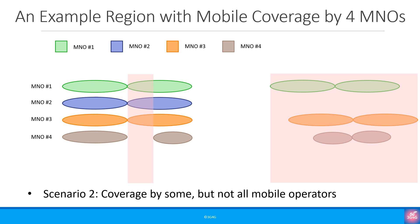When they initiate an emergency call, the mobile will connect to any of the other networks and start the call. In theory, a mobile device doesn't even need to have a SIM to make an emergency call. But most countries do not allow devices without a SIM to initiate an emergency call.